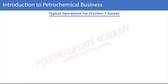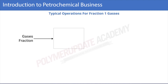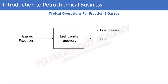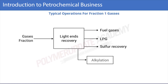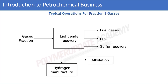Fraction 1 consists mainly of gases and is treated for light ends recovery, from which we get fuel gases, LPG, and also sulfur recovery. Light ends are also subjected to alkylation. From light ends we also recover hydrogen, and therefore hydrogen manufacturing is one of the key activities.